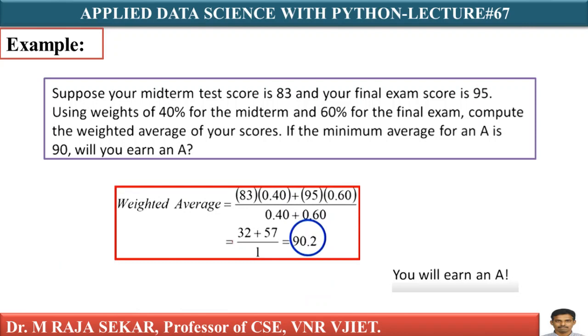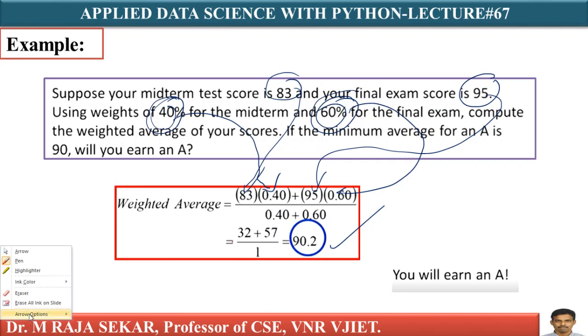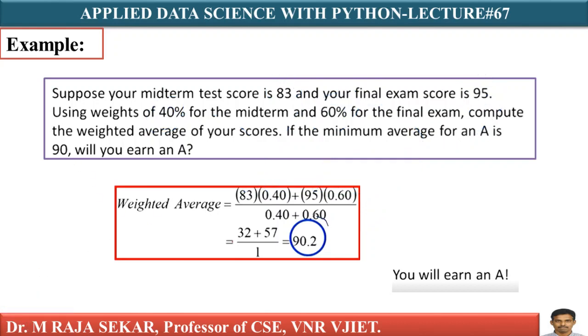How can I calculate weighted average? Your midterm marks is 83 whose weightage is 40%, that's 0.40. Your final exam score is 95 whose weightage is 60%, that's 0.6. By sigma W - that's what the previous slide formula says. W1 plus W2, 40% plus 60%, that is one. You will get 90.2. To get A grade, minimum you have to get 90 score. As you are getting 90.2, you earned A grade.